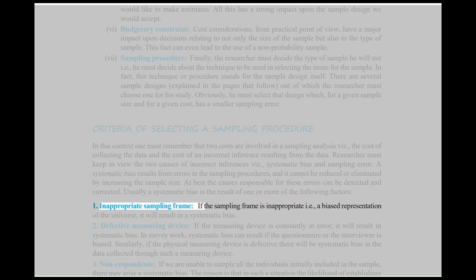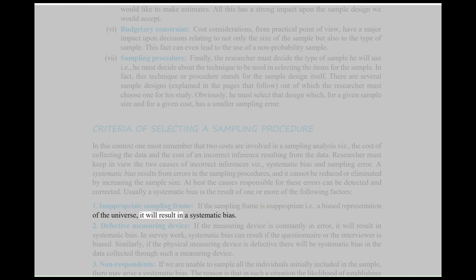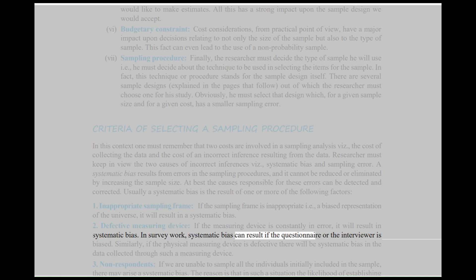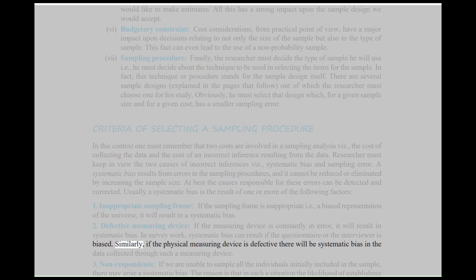First, Inappropriate Sampling Frame: If the sampling frame is inappropriate, it will result in a biased representation of the universe and thus a systematic bias. Second, Defective Measuring Device: If the measuring device is constantly in error, it will result in systematic bias. In survey work, systematic bias can result if the questionnaire or the interviewer is biased. Similarly, if the physical measuring device is defective, there will be systematic bias in the data collected.